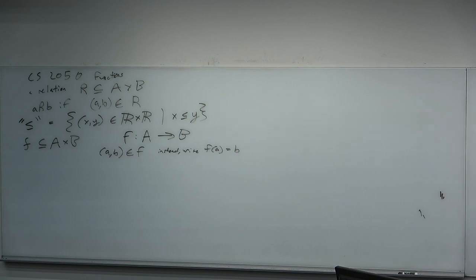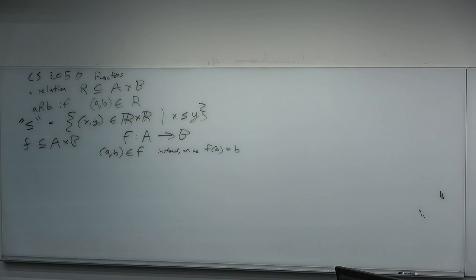A function has a property that relations in general don't have. Have you ever given something that looks like a function and your teacher told you that's not actually a function, that's a relation? Do you remember what property those had to not be a function? The vertical line test — exactly.